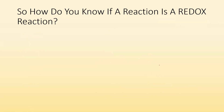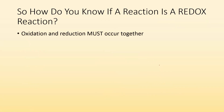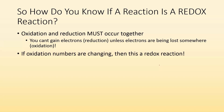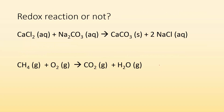How do you know if it's a redox reaction or not? Oxidation and reduction must occur together — you can't gain electrons (reduction) unless electrons are being lost somewhere (oxidation). These electrons aren't coming from nowhere; something has to lose them for another thing to gain. So if oxidation numbers are changing, then this is a redox reaction. If things are losing or gaining electrons, charges are changing, and you have a redox reaction.